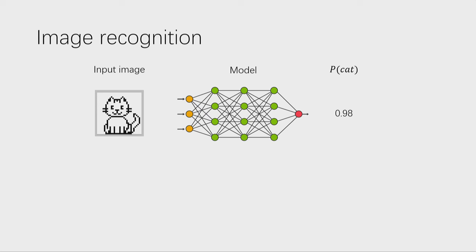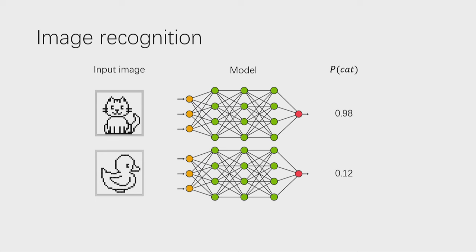Here is the first example about image recognition. If we want to use a neural network to classify images, we take an image as input and the neural network takes it as the first layer. After many layers of forward pass, the network can finally tell us some probability — for instance, the probability of this image being a cat. If the neural network is well-trained, this probability will very well reflect the nature of the input image.